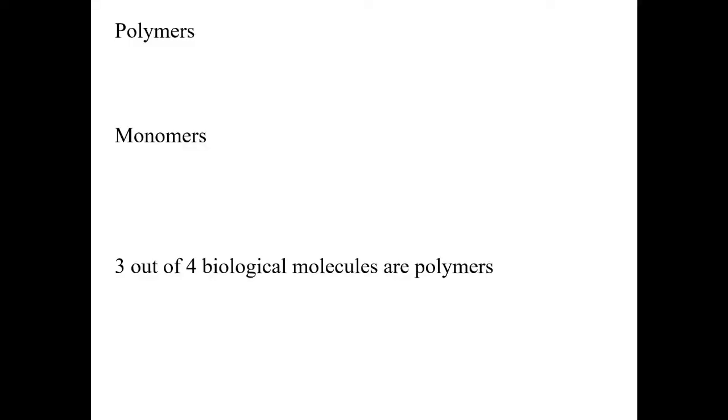Before we start diving headfirst into those biological molecules, let's talk about polymers, because polymers are a pretty important concept that's going to apply to the majority of these molecules. A polymer, as the name implies, is simply a chain of repeating subunits. There's many - poly means many - repeating subunits. A monomer is just one of those subunits, one entity.